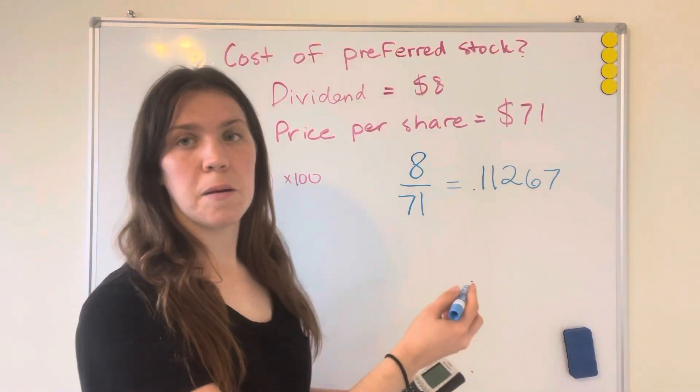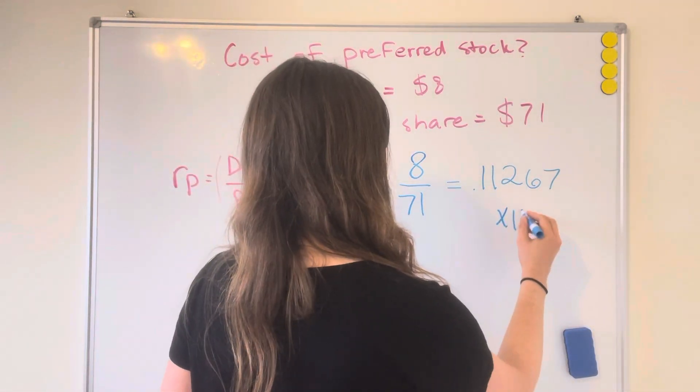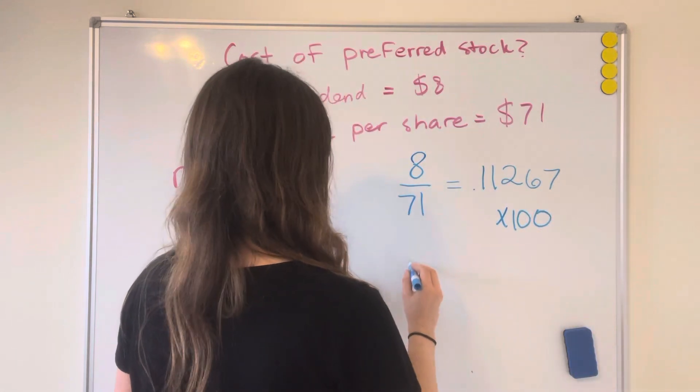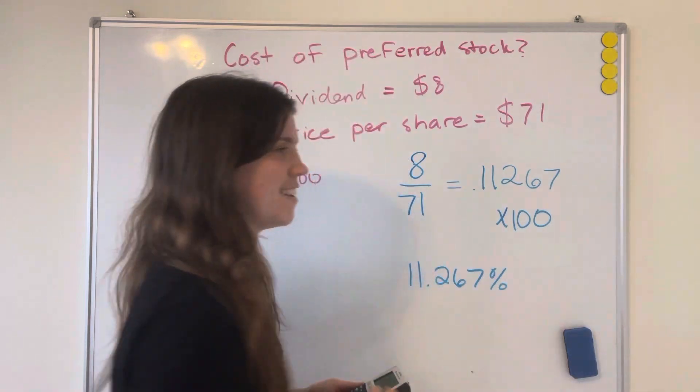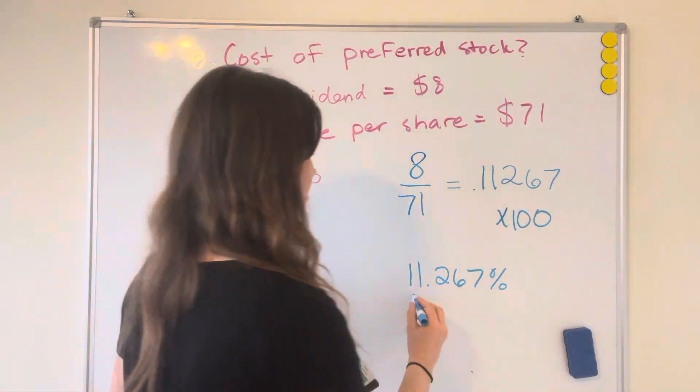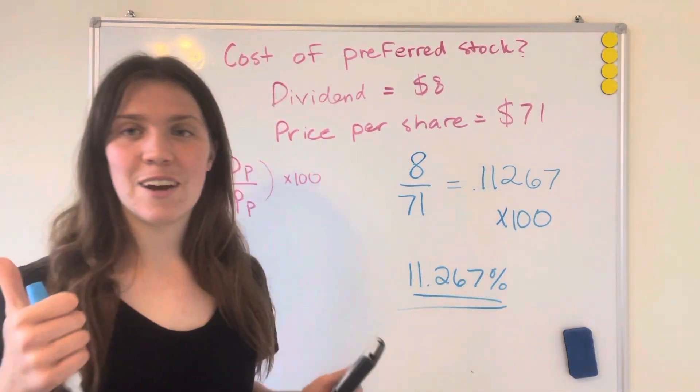Then you're going to multiply that by 100 and round it, so that's going to be 11.267, and then it's going to be a percentage, which is a little odd, but that's how it's denoted. There you go.